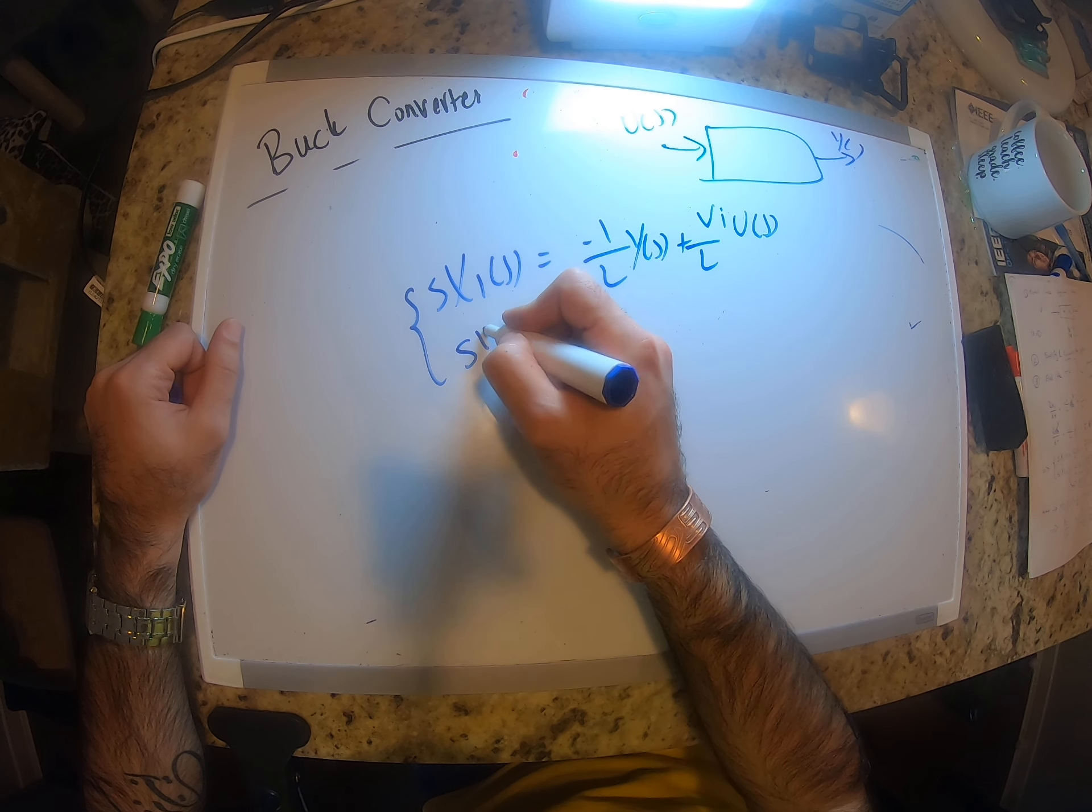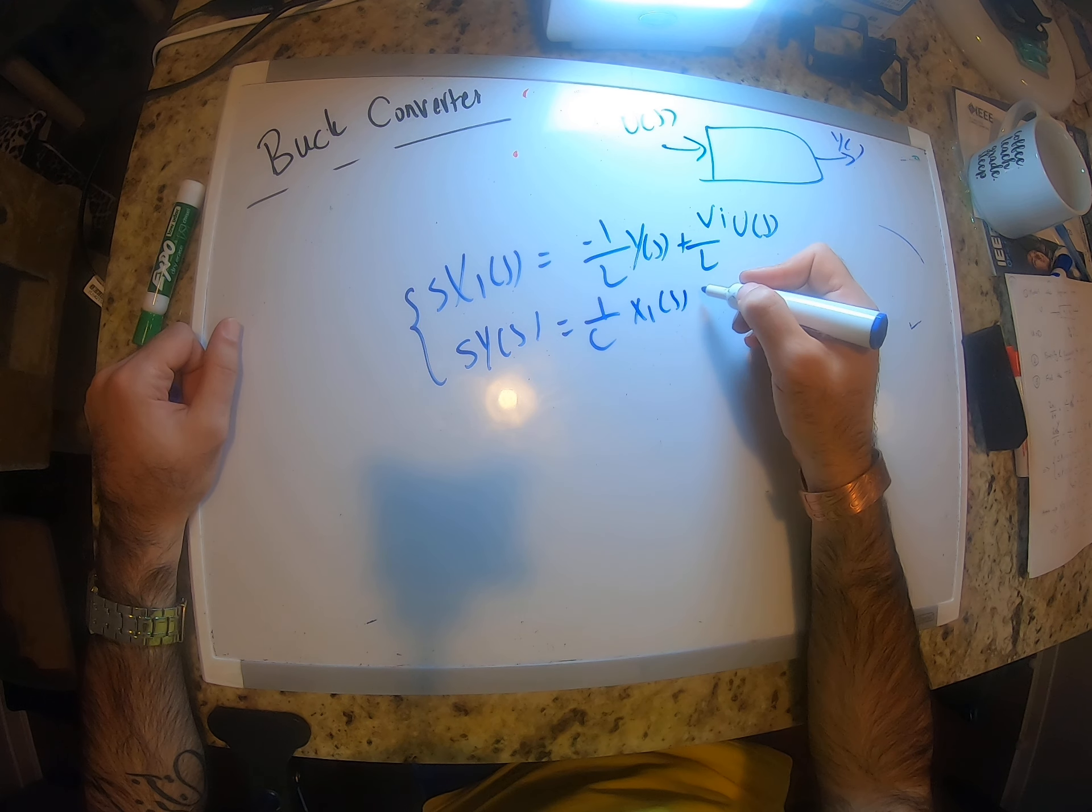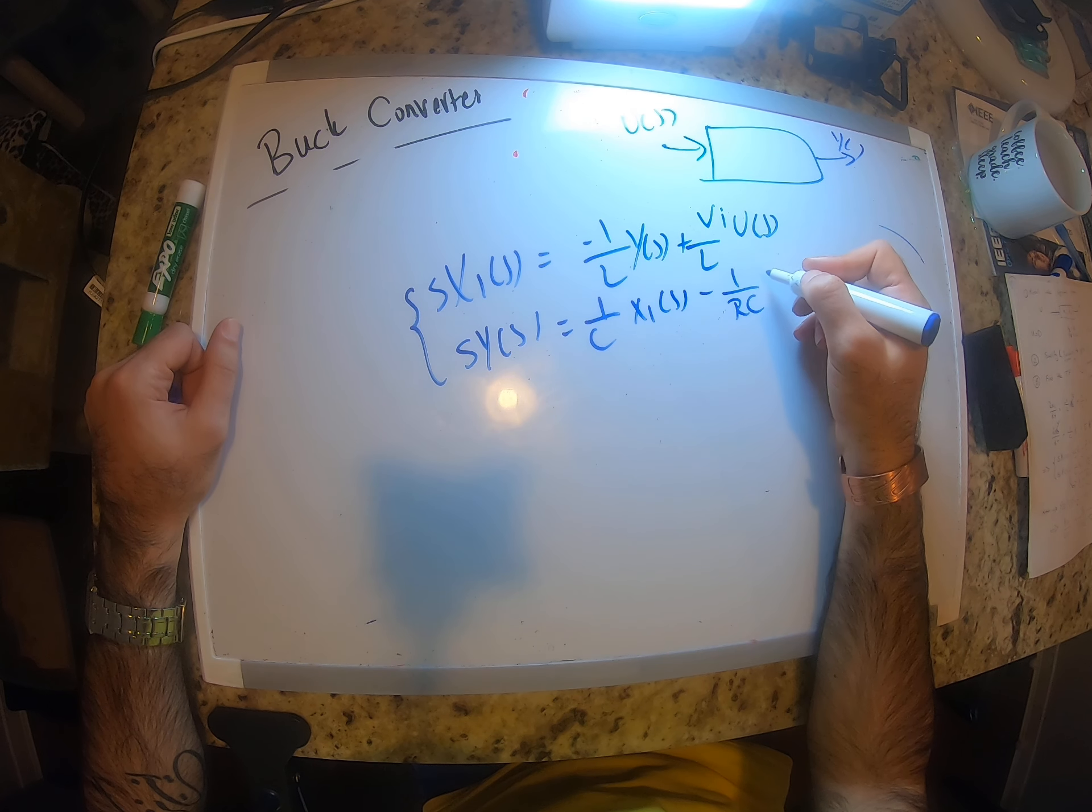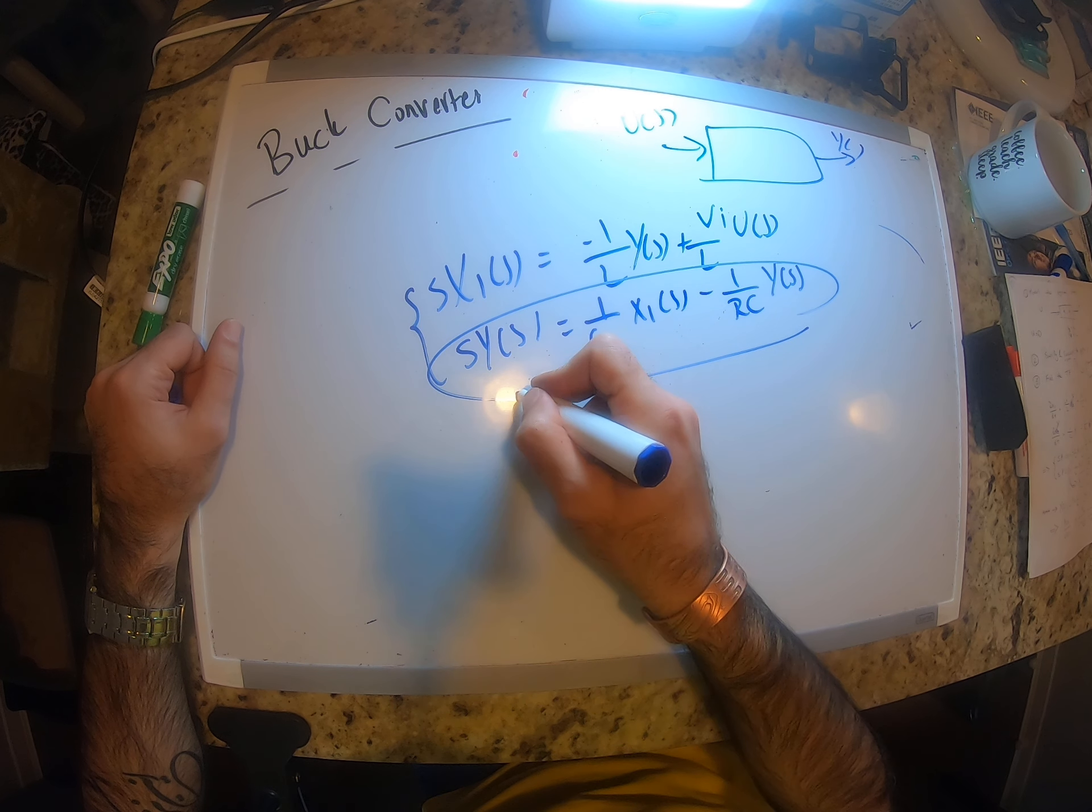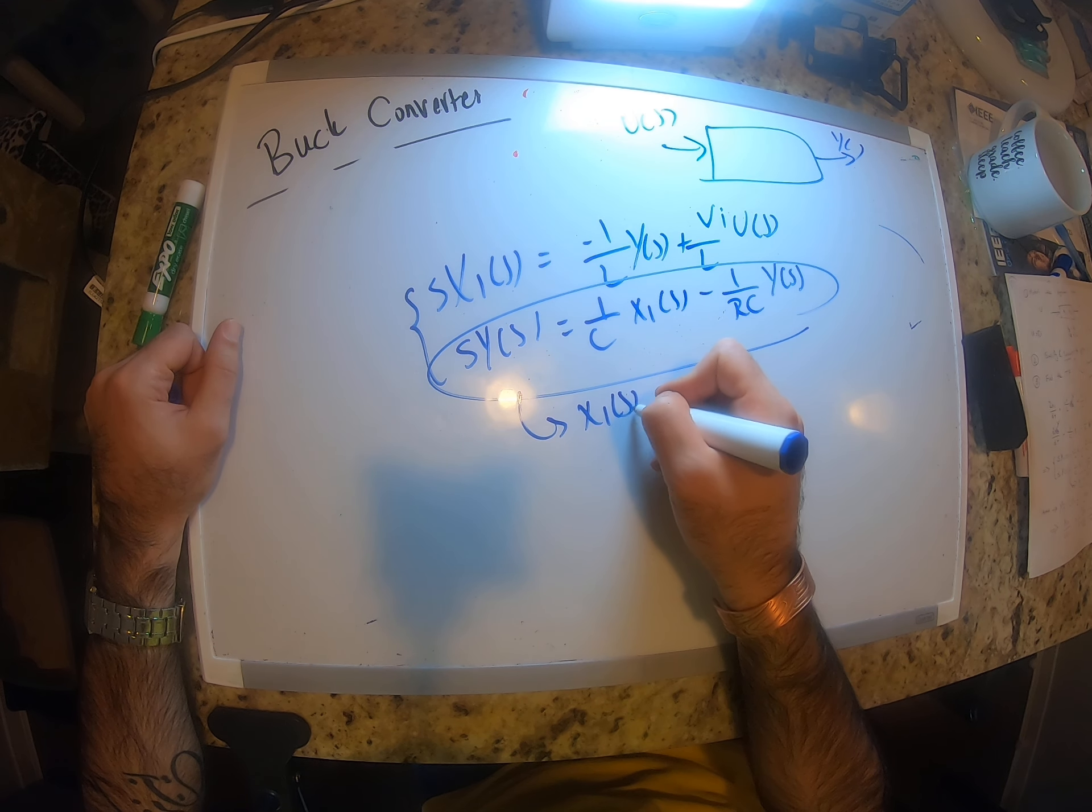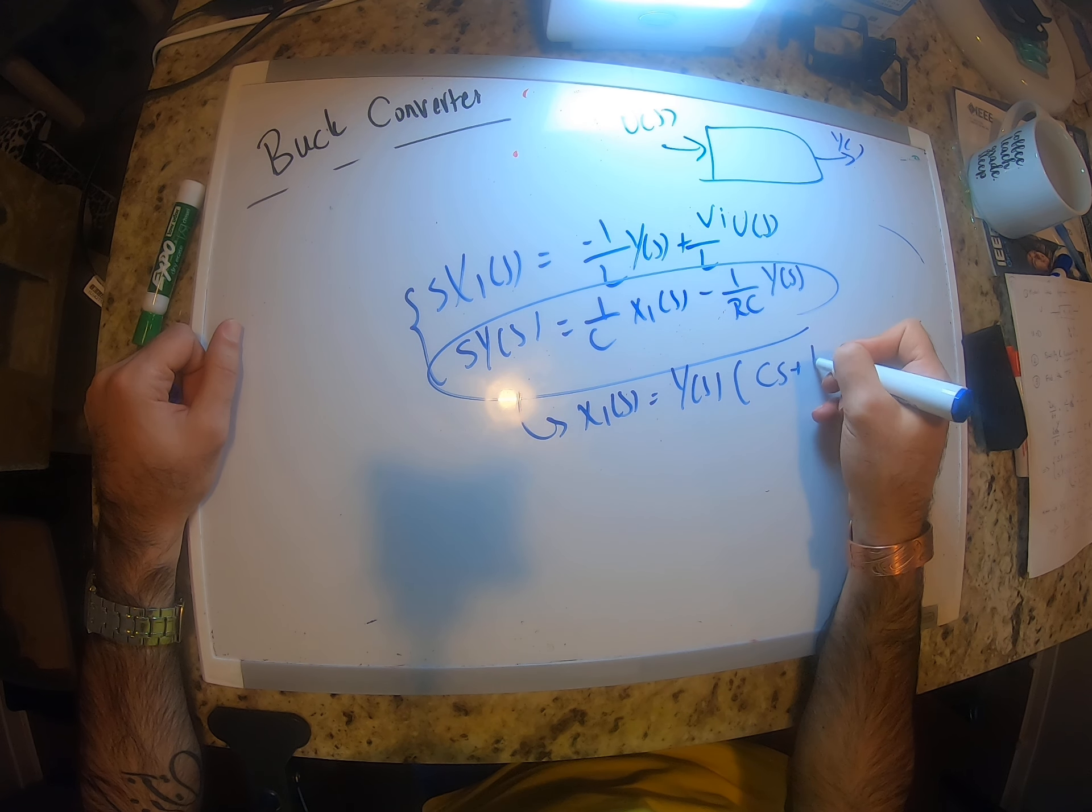s(y)(s) equals 1 over C x1(s) minus 1 over RC y(s). From this one we found that x1(s) equals y(s) times Cs plus 1 over R.